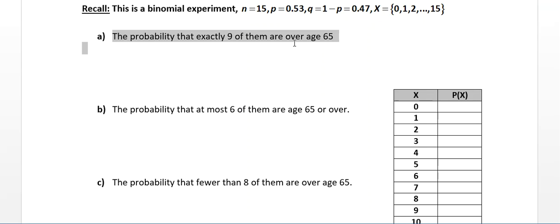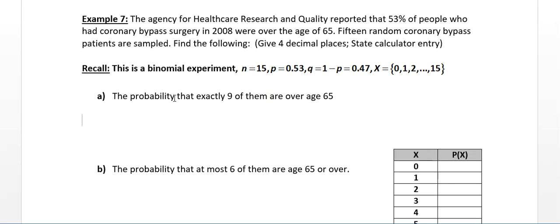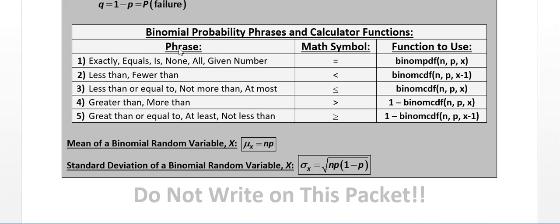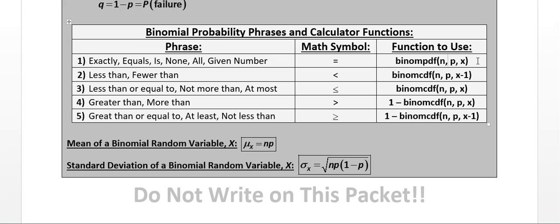The first part asks for the probability that exactly 9 are over age 65. We're getting 15 random patients and want the probability that exactly 9 of them are over 65. Looking at the exam notes packet, the word 'exactly' means we want the probability that X equals 9, and that means we're going to use binomPDF — probability distribution function — with N, P, and X.